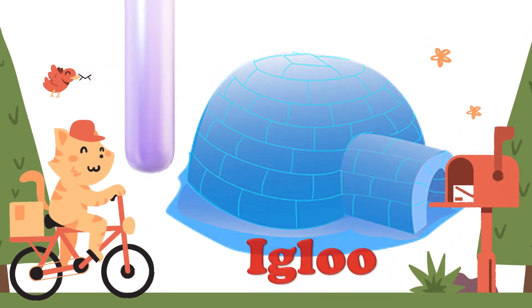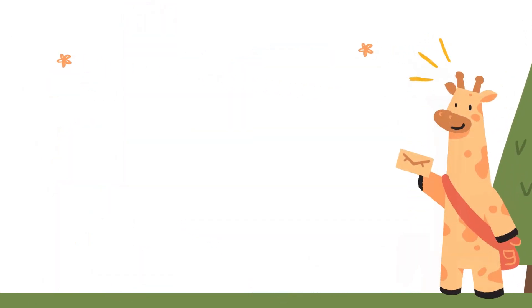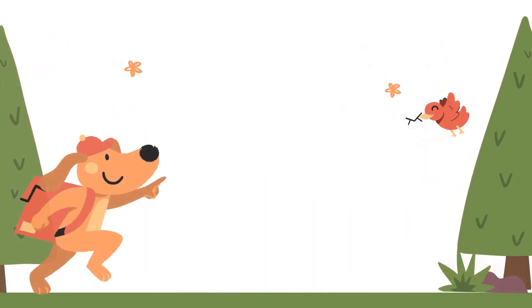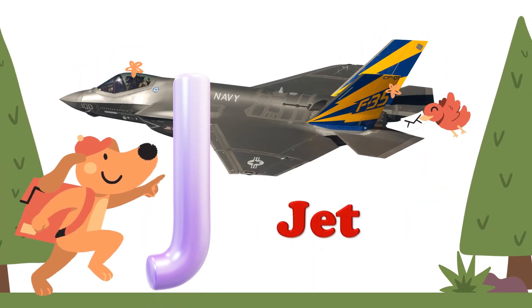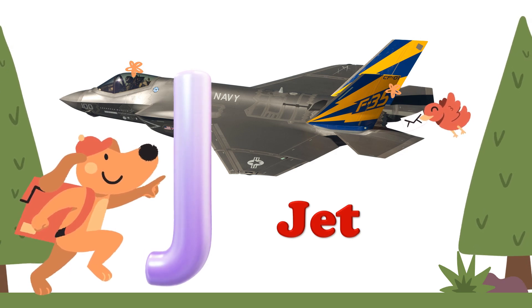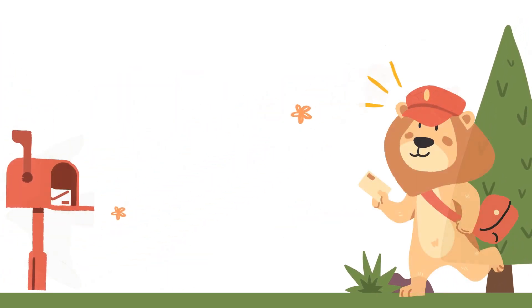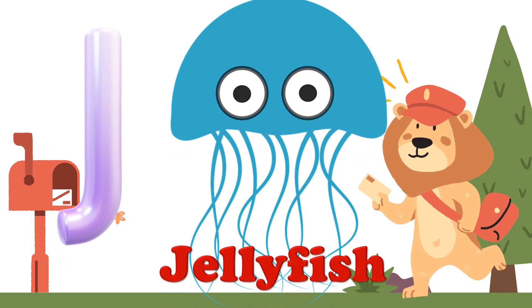I is for Igloo. I is for Iguana. J is for Jet. J is for Jellyfish.